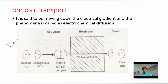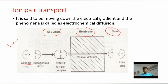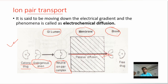For ion pair transport — referring to the diagram from Brahmankar's biopharmaceutics — in the gastric lumen, cationic drugs combine with endogenous anions to form a neutral ion pair complex. This complex easily transports through the membrane, and after reaching the blood, it dissociates into free drug and the endogenous anion.